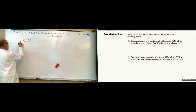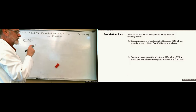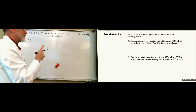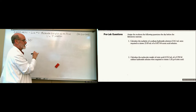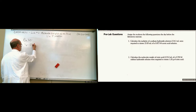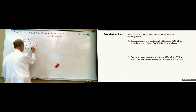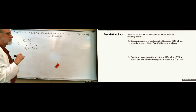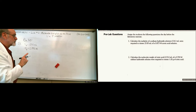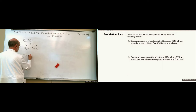Pre-lab question two: Calculate the molecular weight of citric acid given that 25.0 milliliters of 0.750 molar sodium hydroxide — volume of base is 25 milliliters, concentration of base is 0.750 molar — was used to titrate 1.20 grams of citric acid.